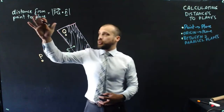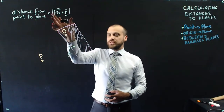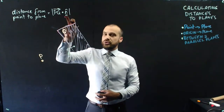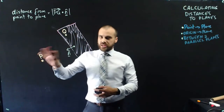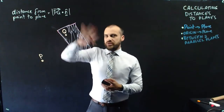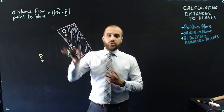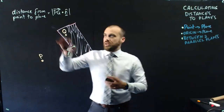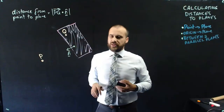The shortest distance from a point to a plane is equal to the absolute value of vector PQ dotted with the unit vector of the normal. P is the random point in space, Q is any and all points on the plane, and N is the unit normal vector — the normal vector with length 1.